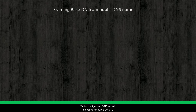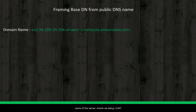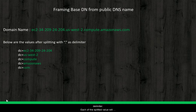While configuring LDAP, we will be asked for the public DNS name of the server where we set up LDAP. Once we give this name, LDAP will split it with dot as delimiter. Each of the split values will have an entity using the domain object class, and it has DC attribute as RDN. Here, DC is an acronym of domain component. LDAP does all these things for us.